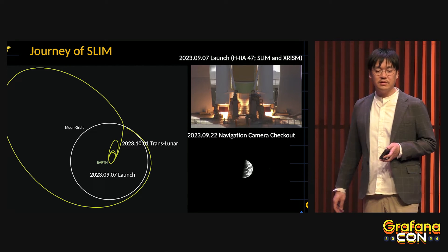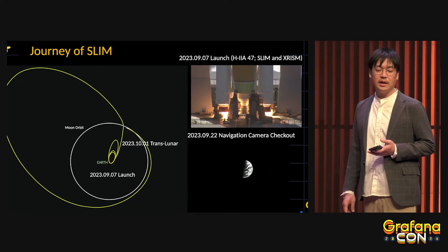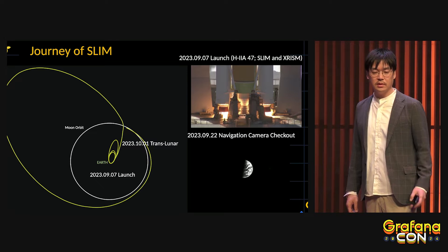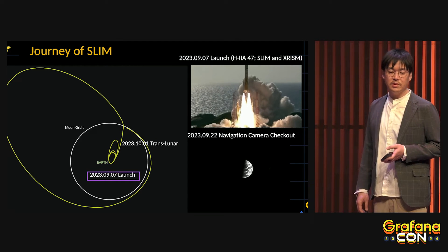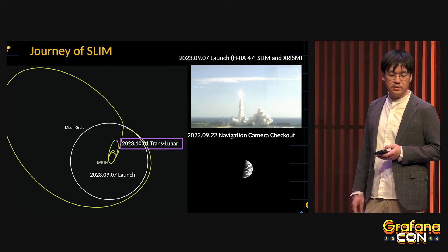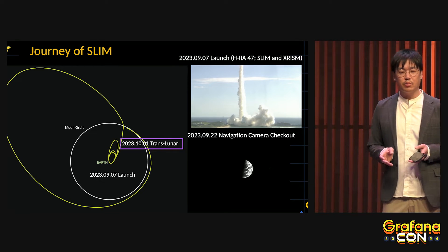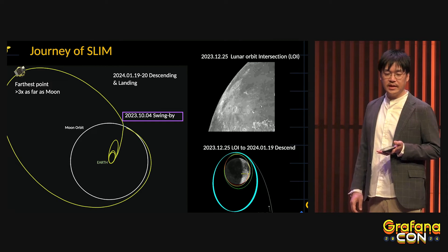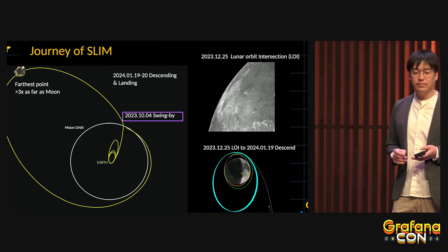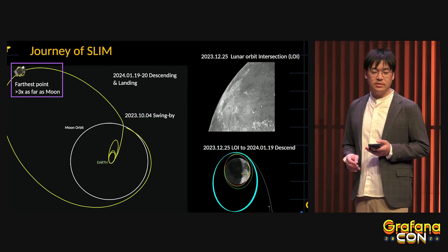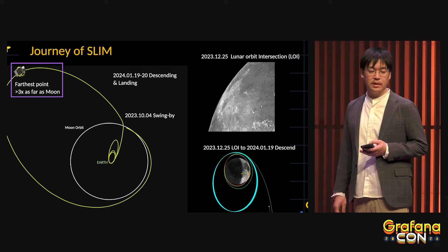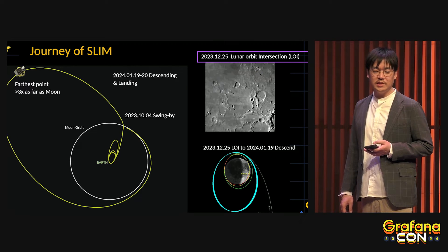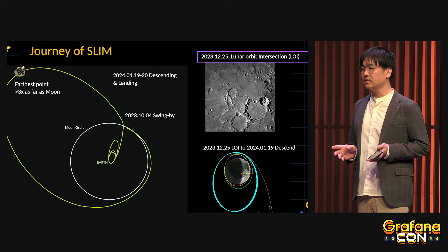Let's move to the actual flight data of SLIM. In this figure, the center is the Earth, the white circle is the moon's orbit, and the yellow line is SLIM's actual trajectory. SLIM launched on September 7th — here is a movie of the launch. SLIM stayed near Earth for a while, then set off to the moon on October 1st, reaching its furthest point at three times the moon's distance from Earth, then returning toward the moon on Christmas of last year. This movie was taken at that time — you can see the craters very clearly as it approached.